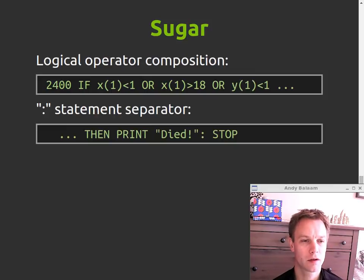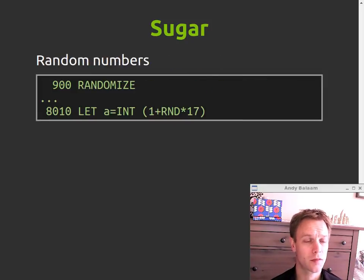Other things you've got in the language you can stick together your logical operators using OR and AND and things like that. You can have multiple statements on one line by using colon to finish one statement and start the next one. You've also got random numbers. Somewhere near the beginning you say RANDOMIZE which initializes the random number generator and then you just use RND and that gives you a random number.